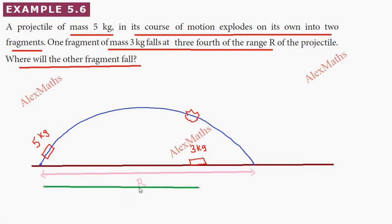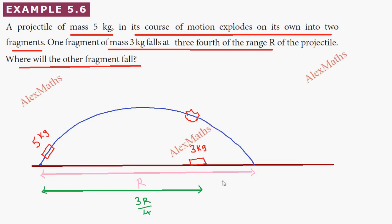So here on the diagram, we mark that at a distance of three-fourths R — that is 3R/4 — after this distance the projectile would have completed the range. So here, three-fourths R is marked, and the remaining one-fourth R brings us to the full range.